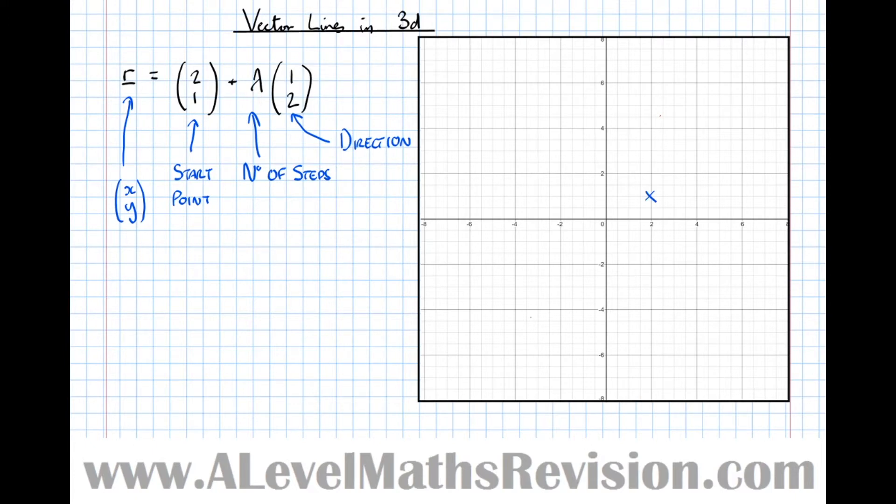Now, we're allowed to choose whatever value of lambda that we want to generate any point on a line. So in this case, if I let lambda equal 1, then it's starting at (2,1), then taking one step in the direction (1,2). So let's mark that on the diagram. The direction we're traveling in is 1 in the x direction and 2 in the y direction. So that's the point we end up on.